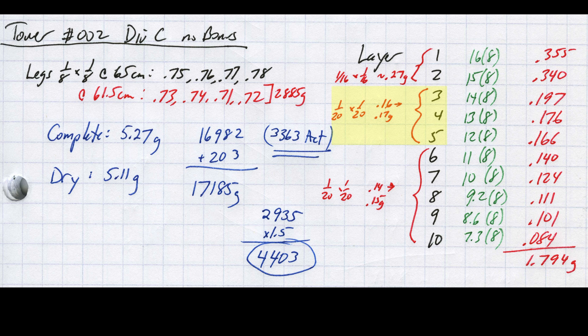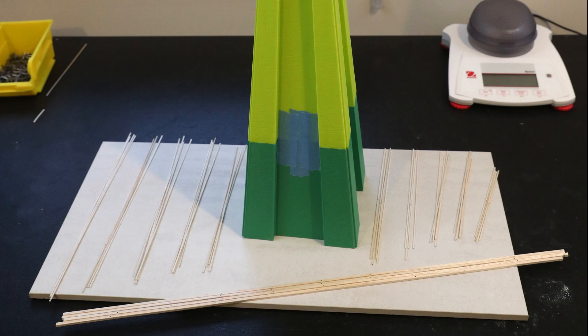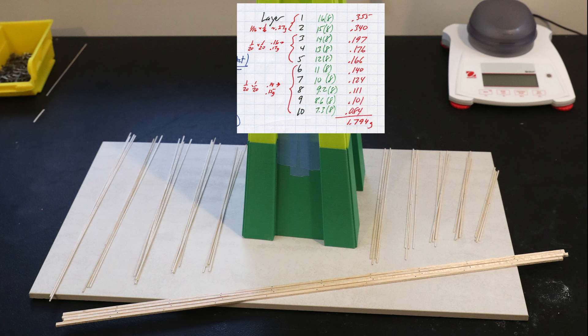Layers 3, 4, and 5 were made from 1/20th by 1/20th and came from the mass bin of 0.16 to 0.17 grams. Similarly, layers 6 through 10 still used 1/20th by 1/20th, but came from a lighter group of 0.14 to 0.15 grams per stick. Once I have picked the raw material to use for each of these layer groups, the next step is to pre-cut all the pieces for every layer.